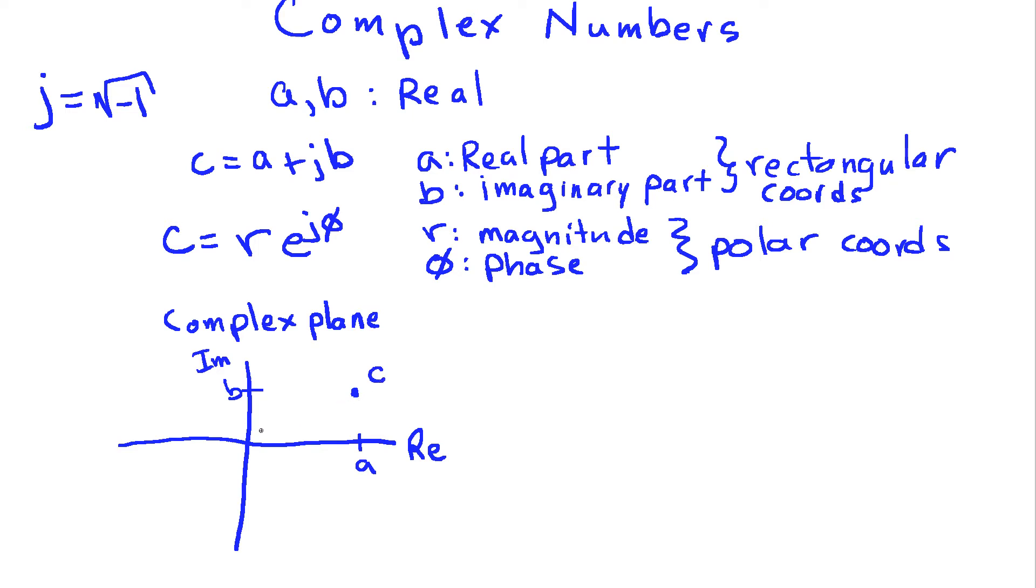So if I'm going to draw the number c equals a plus jb in this plane, that's going to be represented by some point where the real axis has length a, and the coordinate in the imaginary axis is b. So this is our complex number c. Now I can also represent this number in polar form by looking at the magnitude of the number.